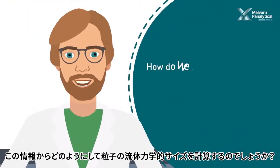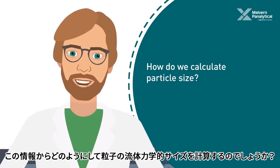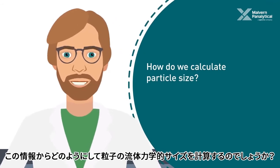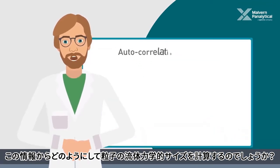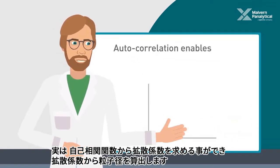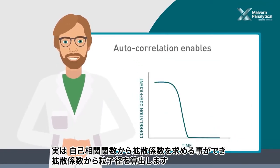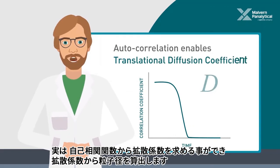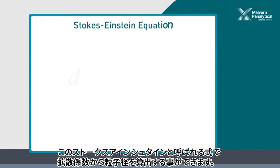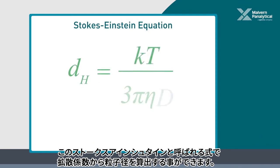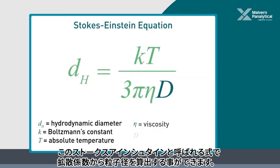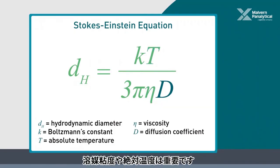So how do we use this information to calculate the particle's hydrodynamic size? The autocorrelation function we've created enables us to extract the translational diffusion coefficients mentioned earlier. These values are used in the Stokes-Einstein equation to obtain our size information. Variables such as solvent viscosity and temperature need to be known, because they'll affect the particle's diffusion rate.